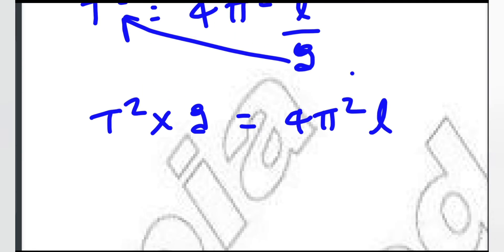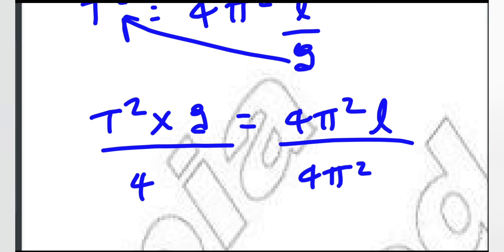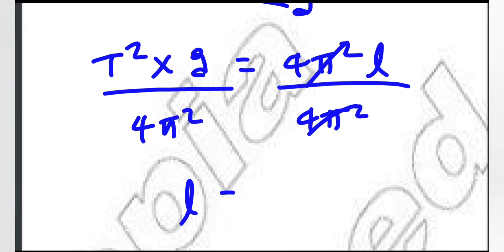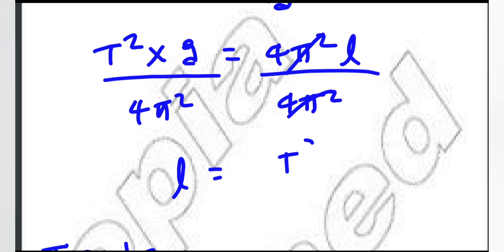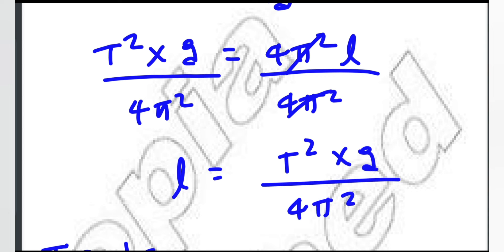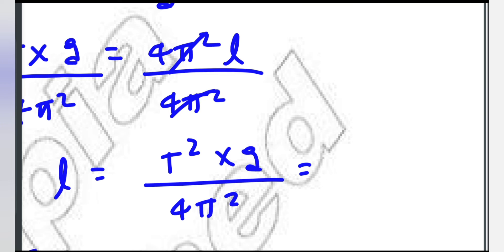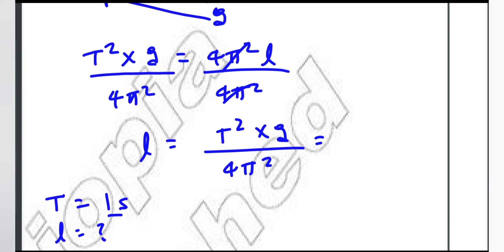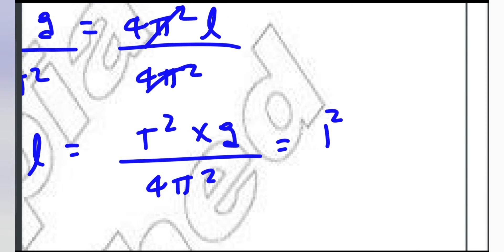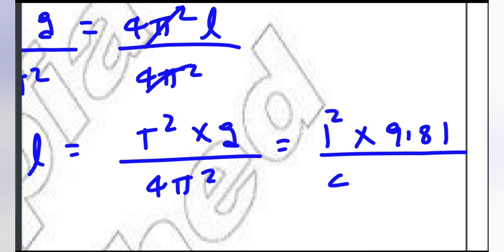Squaring both sides: T squared equals 4π squared times L over G. Solving for L: L equals T squared times gravity over 4π squared. With T equals 1 second and g equals 9.81 m/s².